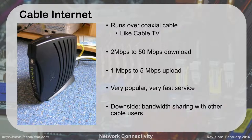Cable internet is very popular all around the country and gives you very fast service. The downside is you have bandwidth sharing with other users. If you're in an apartment complex and everyone comes home at 5 o'clock at night, your internet speed drops significantly. If you're up at 3 in the morning, you're getting really fast speeds. You don't have that same problem with DSL or fiber, but cable internet is still much faster than DSL overall.